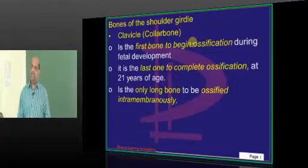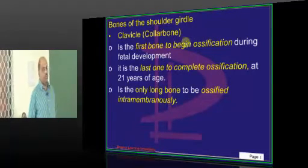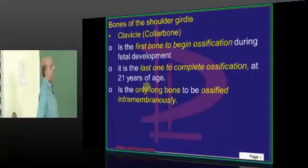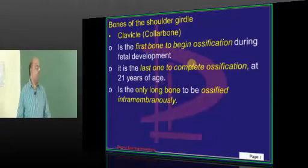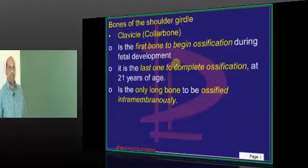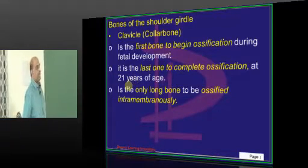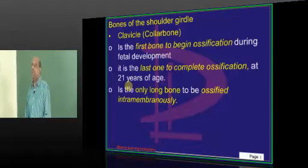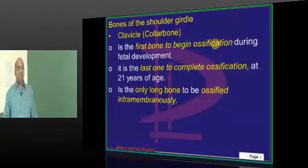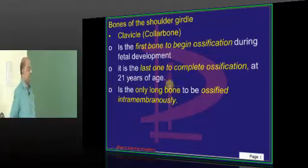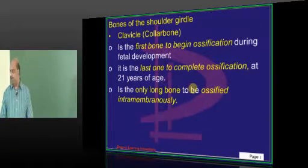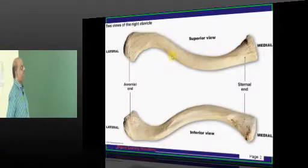If you look at the bones of the shoulder girdle, the clavicle — the collar bone — is very important. The clavicle is the first bone to begin ossification during fetal development, one of the favorite questions of the examiner. It is also the last bone to complete ossification after birth, with ossification completed at around 21 years of age. It is also the only long bone typically ossified intramembranously, which is important to remember.